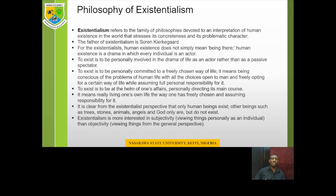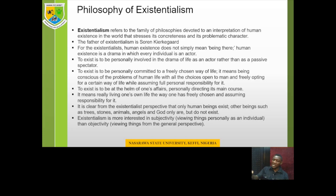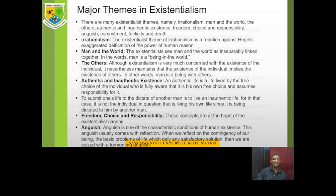In the philosophy of existentialism, only human beings exist. All other beings — such as trees, stones, animals, angels, and God — do not exist; they simply are. This is because of the emphasis on human freedom. It is only human beings, when compared to other beings, that have human freedom, and that freedom allows them to make choices — choices that hold them responsible for whatever actions they take. So in existentialism, only human beings exist; all other beings are.